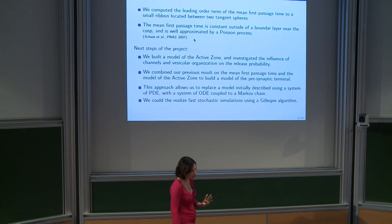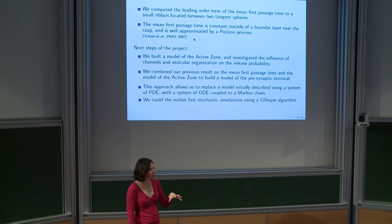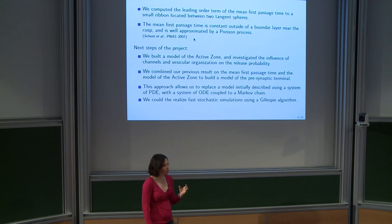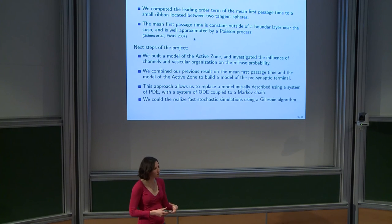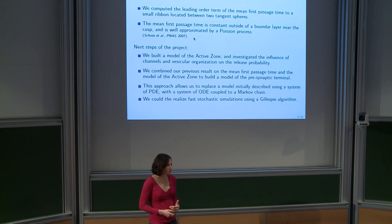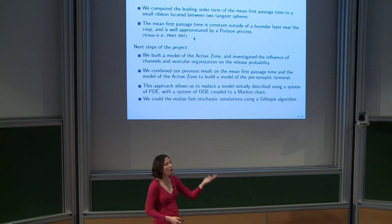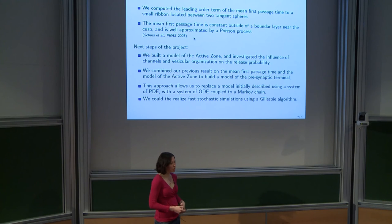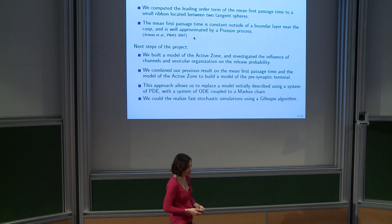Using the same kind of analysis, we computed the probability to reach the cylinder before escaping the domain. Using these results, we could build a model of the active zone — the place where vesicles are located and calcium channels are located — to investigate the influence of channel positions on the crowding of vesicles and the release probability, which is the probability to have fusion. We could also build a model of the presynaptic terminal as a whole.